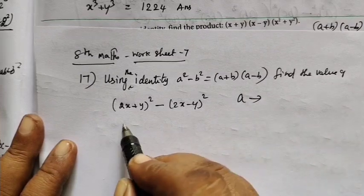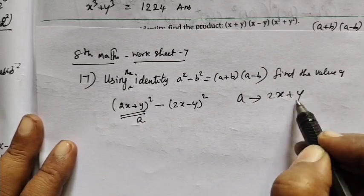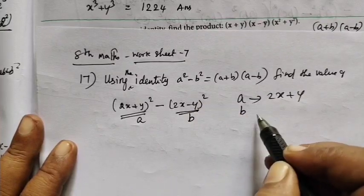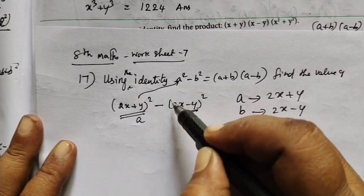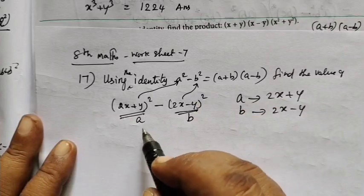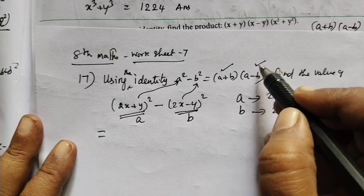A is 2x plus y. Place of b, this is b, 2x minus y. So A is 2x plus y, B is 2x minus y. This is a plus b, a minus b.